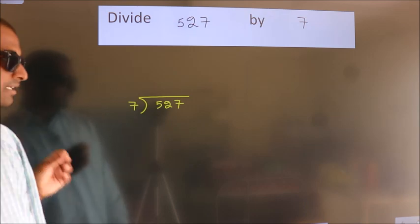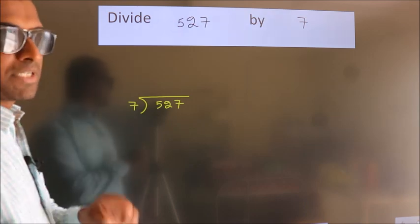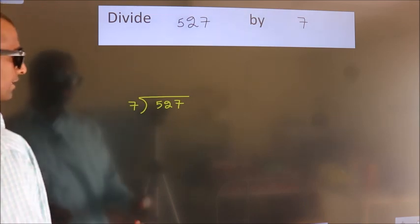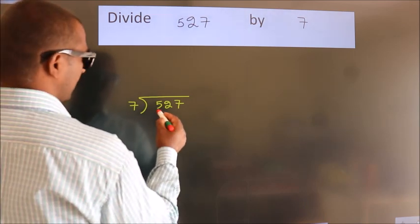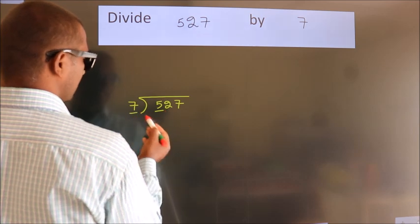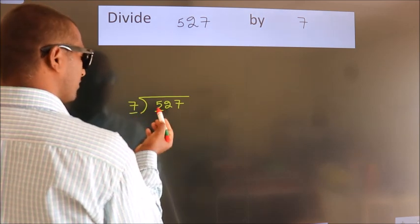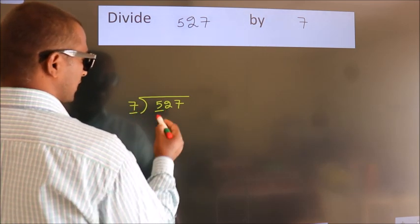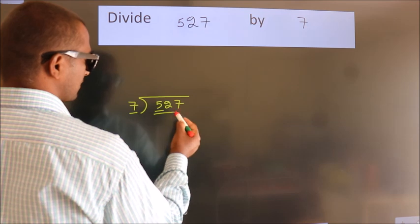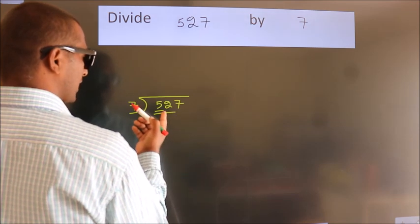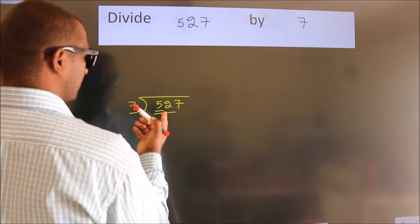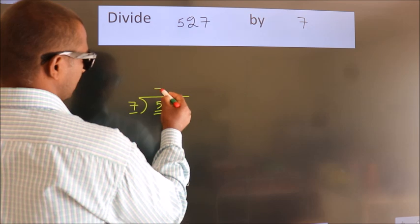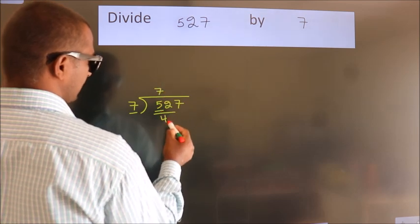This is your step 1. Next, here we have 5 and here 7. 5 is smaller than 7, so we should take two numbers: 52. A number close to 52 in the 7 table is 7 sevens — 49.